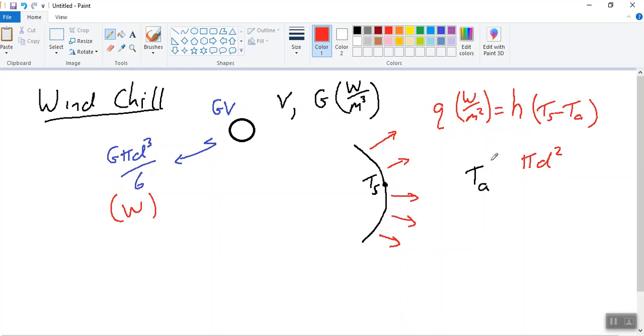So if we look at a heat balance on this object, we can write that g times pi d cubed over 6 is equal to h into pi d squared into TS minus TA.